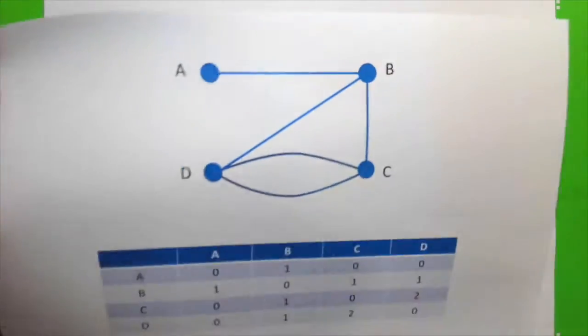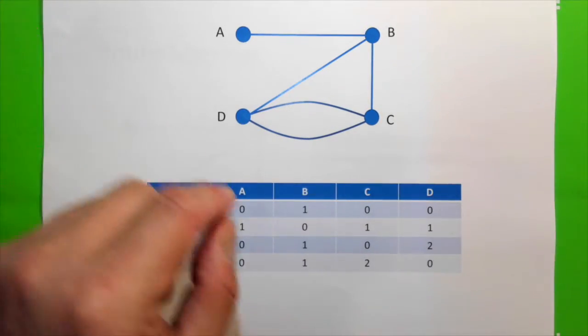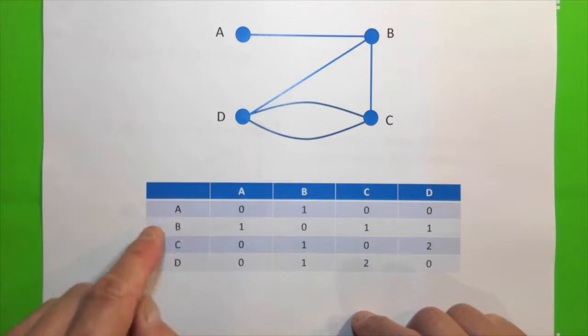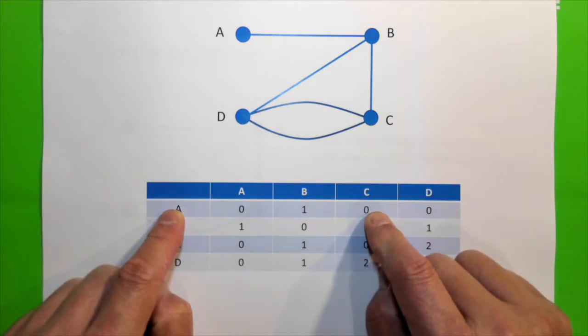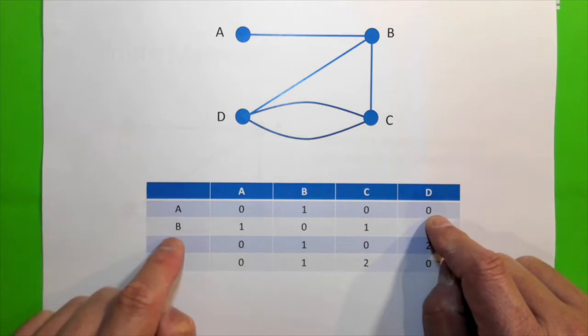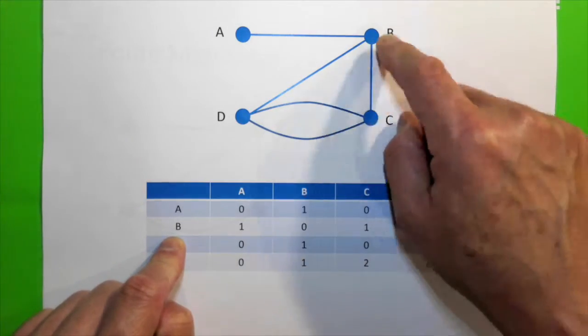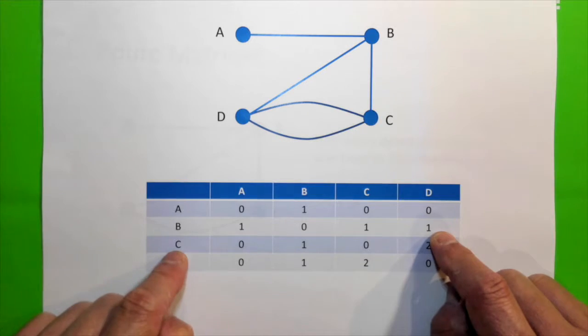Now, we can work out the route matrix in a table. For example, A to B, one way. A to C, there's no direct way. A to D, there's no direct way. B to A, one way. B to C, one way. B to D, that's one way. What about C?